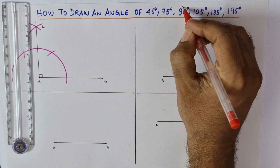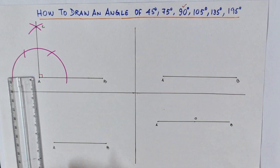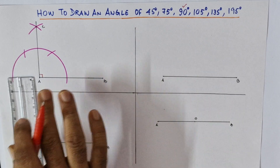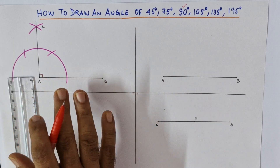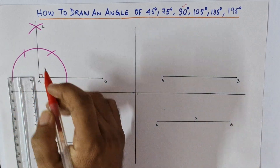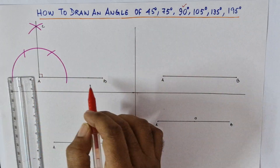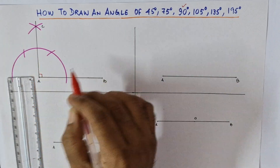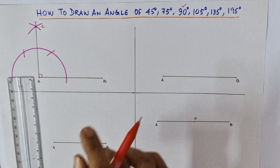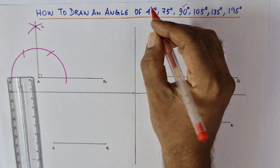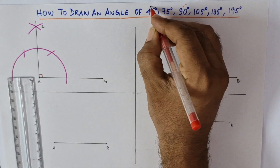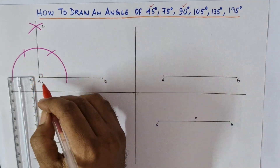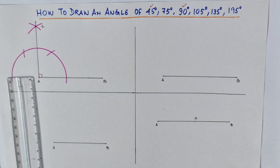So we got 90 degrees with just the help of a compass, as we have seen in my earlier lectures. Now after drawing this 90 degrees, if I bisect it — 90 divided by 2 is 45 degrees — we will draw 45 degrees by bisecting this 90 degrees.